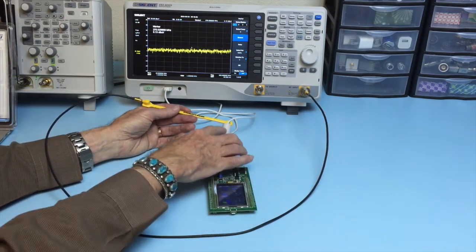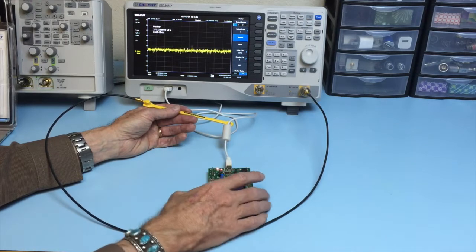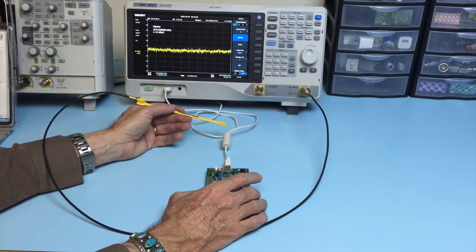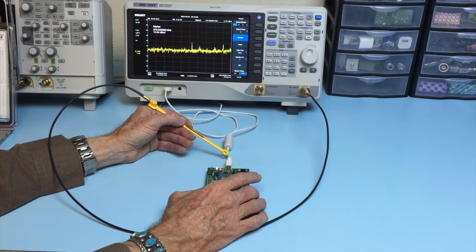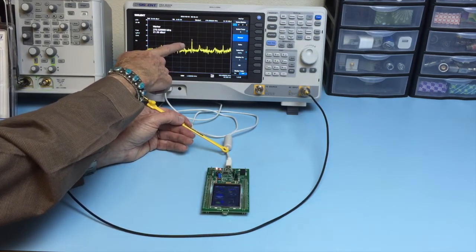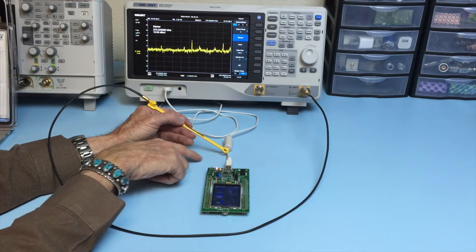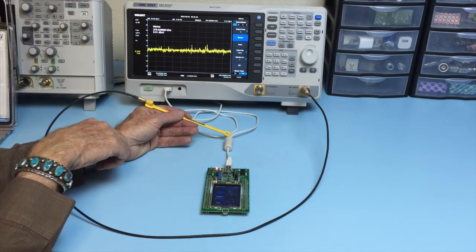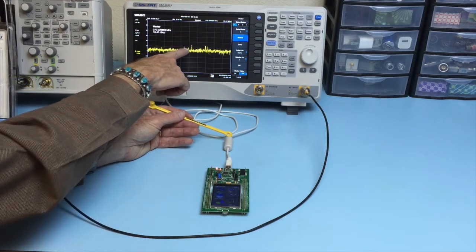Notice the cable does have a ferrite choke here which should choke off some of those signals. Now we're seeing the 270 MHz for example on the board side of this choke. Let's go over on this side and we see that it's a lot less.